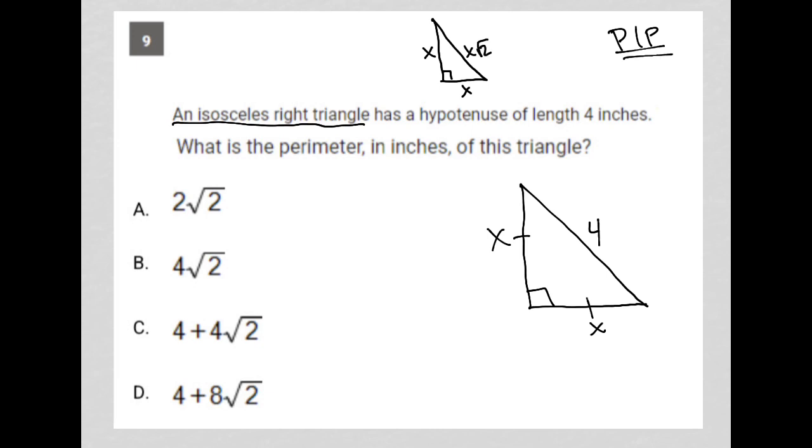So, what does that tell me? That tells me that this 4 here in the question's right triangle is the x root 2 side, right? So, I can now solve for x to figure out what these x values are.